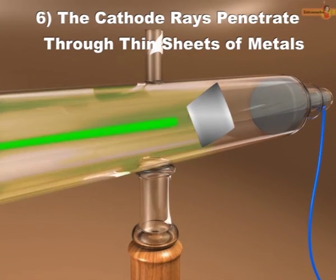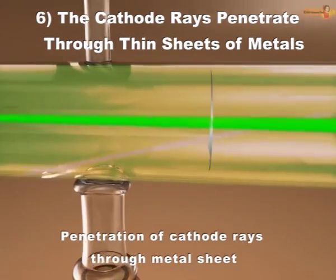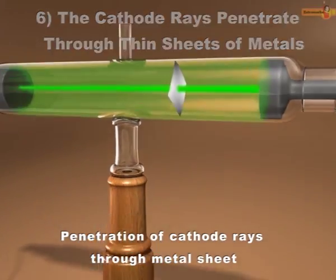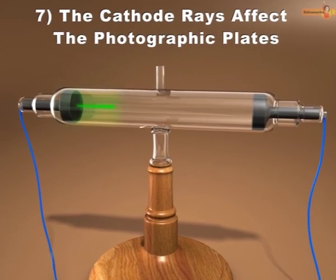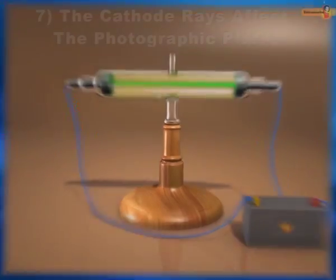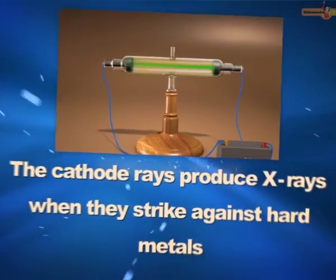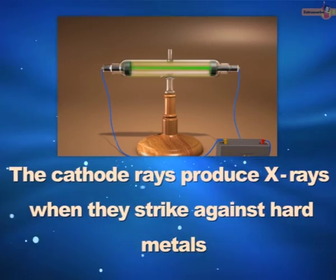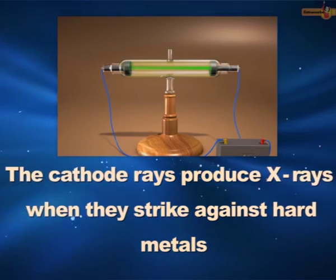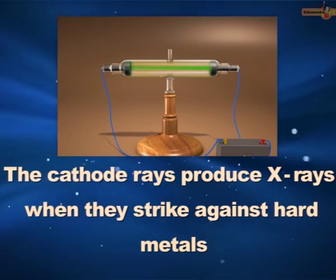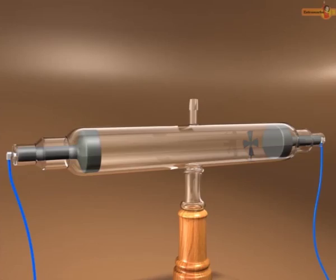The cathode rays penetrate through thin sheets of metals. The cathode rays affect the photographic plates. The cathode rays produce X-rays when they strike against hard metals.